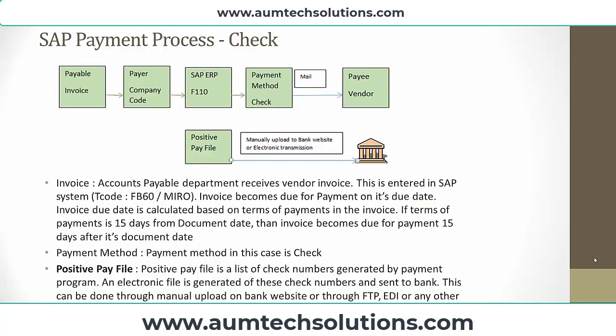The business process starts with receiving the vendor invoices. Once the vendor invoices are received, they are entered in SAP. The transaction code for the same is FB60 or MIRO. Once the vendor invoices are entered in the SAP system, the next step is to run the payment program, F110.